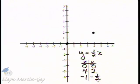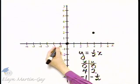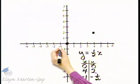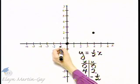Now let's plot this ordered pair. Start at the origin, move one to the left because it's negative, then one-half unit down, because that's also negative.